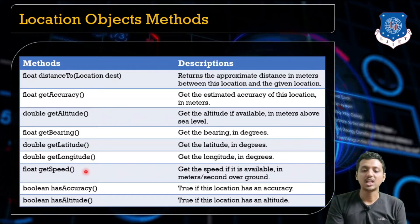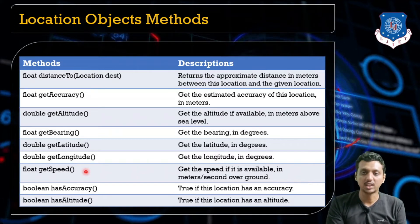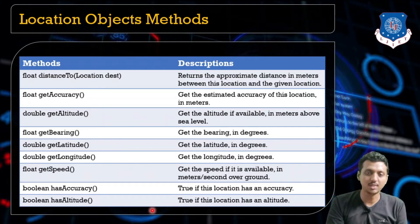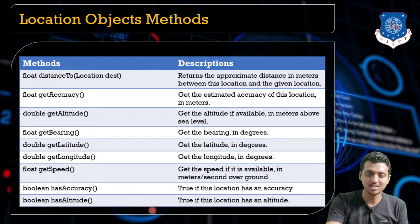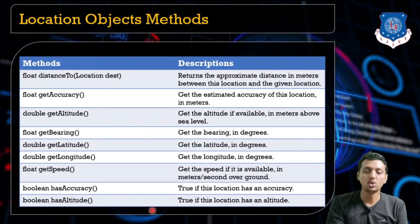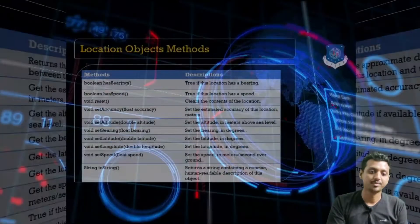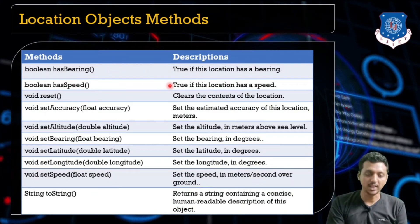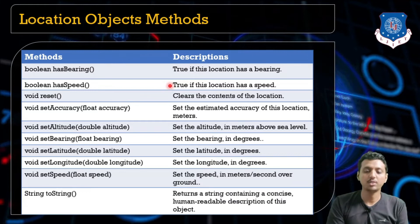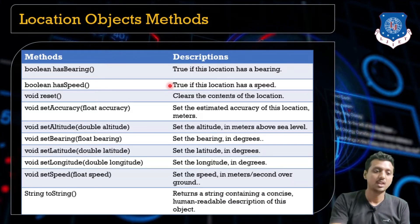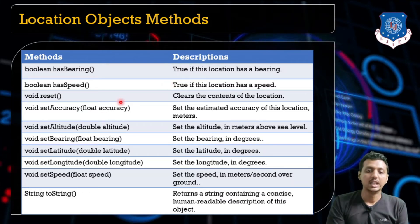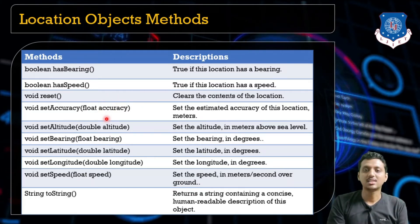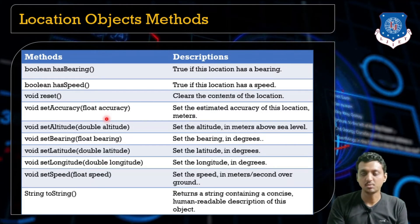getSpeed() returns the speed in meters per second over the ground. hasAccuracy() returns true if the location has an accuracy value, otherwise false. Similarly, hasAltitude() returns true if the location has an altitude. hasBearing() returns true if the location has a bearing. hasSpeed() returns true if the location has speed. void reset() clears the content of the location. void setAccuracy() sets the estimated accuracy of the location in meters.